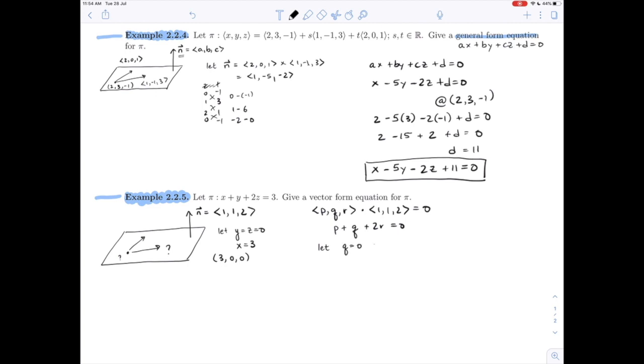So let's first start and say, well, let's let q equals 0 and r equal 1. For example, any choice will do. If I do that, I'm going to have p plus 2 equals 0 or p has to be -2, which is telling me that the vector (-2, 0, 1) is parallel to the plane or is in the plane.